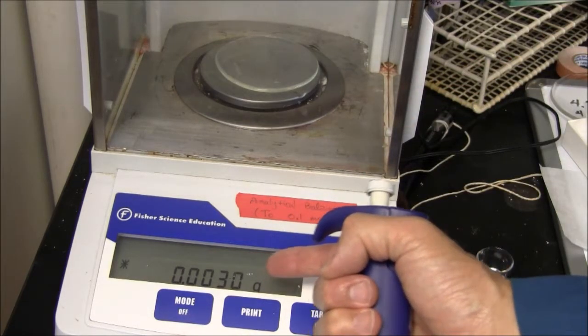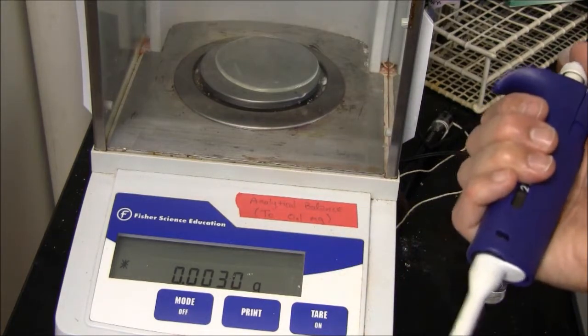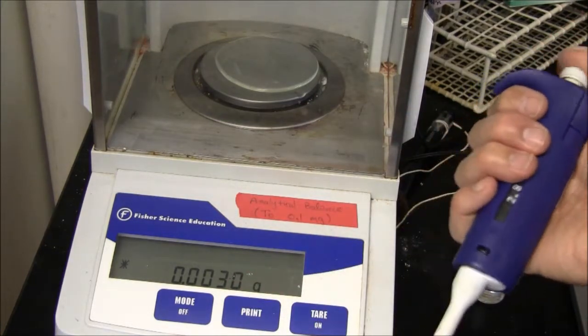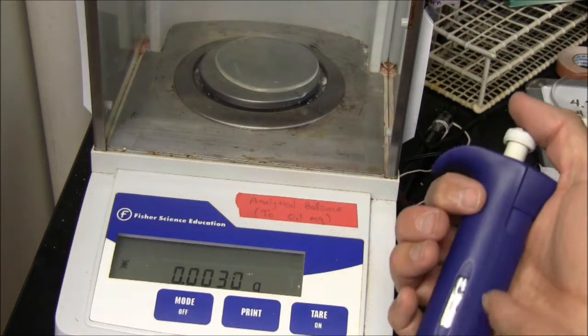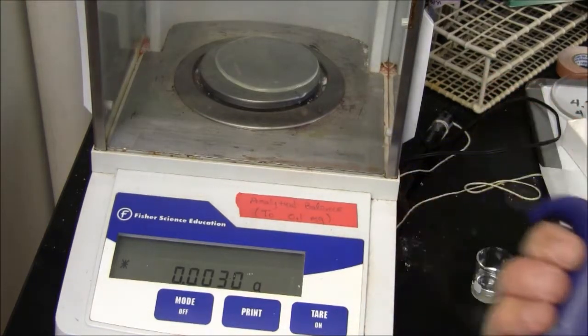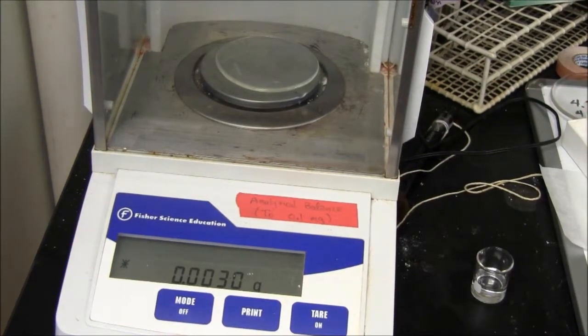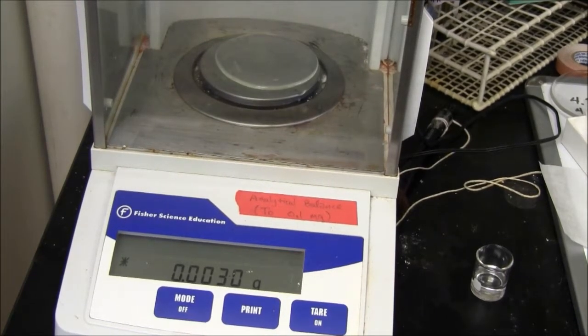It looks like the scale says I actually delivered 3.0 microliters. So I can try that again, practicing to get accurate pipetting. With small volumes, it takes skill and practice.